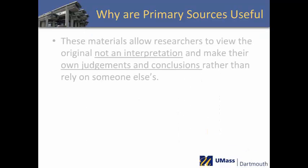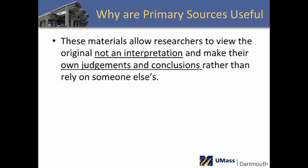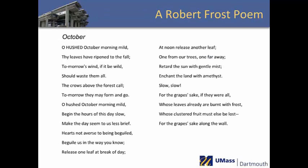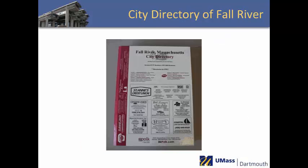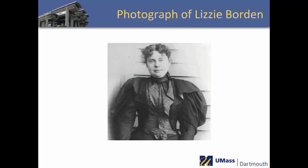So why are primary sources useful? Primary sources allow you to examine and evaluate the original material independent from the judgments and conclusions of others. Having the original work allows the researcher to make his or her own interpretations without bias. Thus fiction, such as this Robert Frost poem, can be a primary source. Maps are often used by historians to help them understand communities and their histories. This directory is a snapshot of people and services available in Fall River in 2003. Photos allow you to see real characteristics that descriptions may have a hard time capturing.